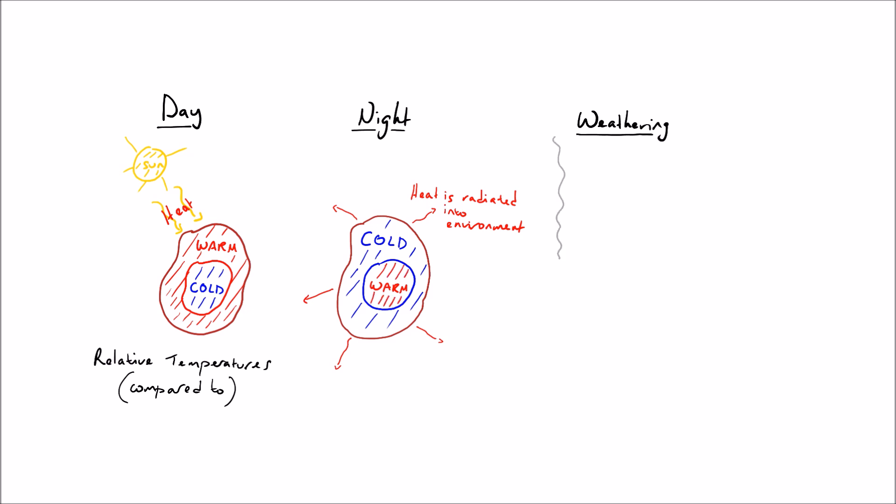Now what happens is that this occurs every day and every night over a long long period of time, and this repetition of the heating and the cooling of the rock tends to make sure that the layers of the rock become weaker and they lose their consistency, and this causes the layers to start to peel away and weakens the bonds between them.